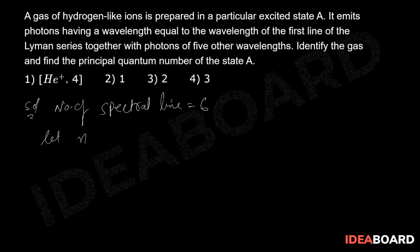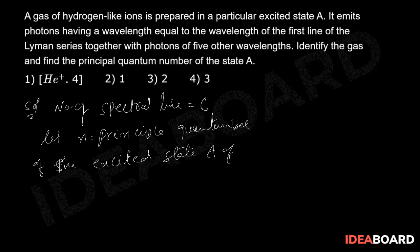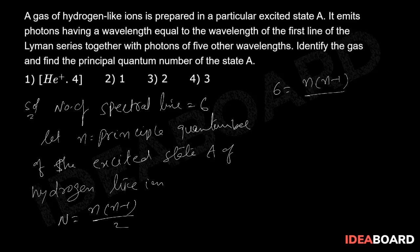Let you take here N, which is the principal quantum number of the excited state of hydrogen-like ion. Here we can write N equal to, that is capital N, small n into small n minus 1 by 2, that is 6 equals N into N minus 1 by 2.